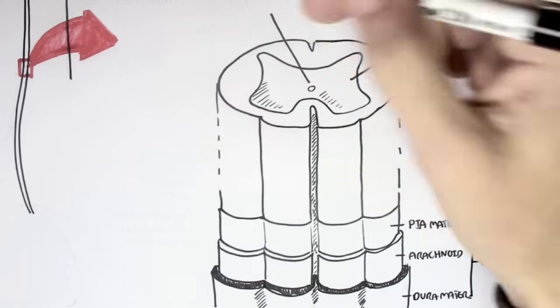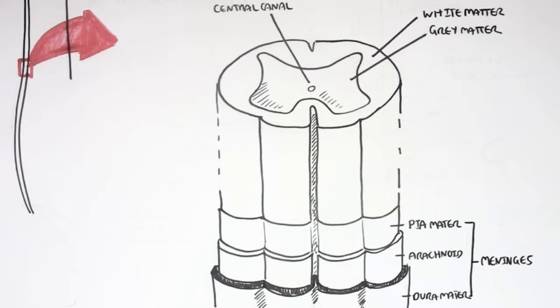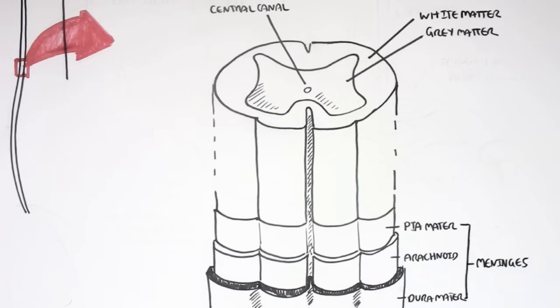And then in the centre here, this round thing, we have the central canal, which actually contains cerebrospinal fluid, which is important fluid for nourishing the central nervous system, that is the spinal cord and the brain.